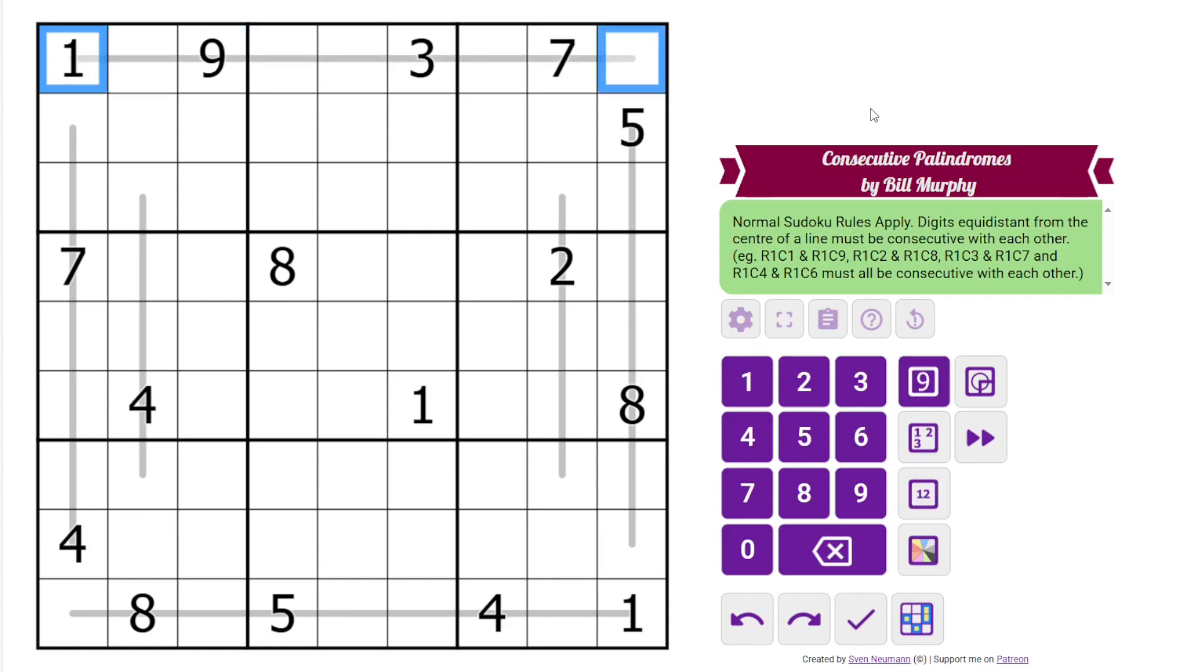We can't have the same digit in these two cells because they are in the same row. So rather than that, the digits in these cells must be consecutive. Same for these digits, these digits, and these digits. Any pair of digits that are equidistant from the center of a line. And those are the rules.